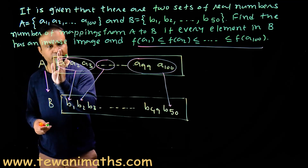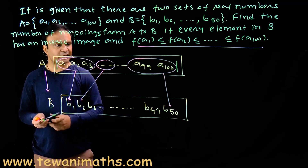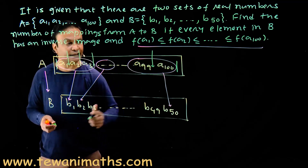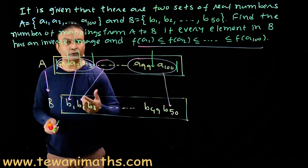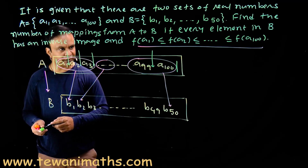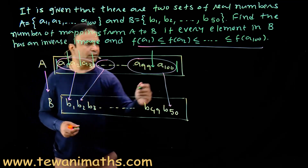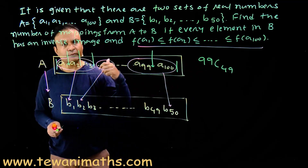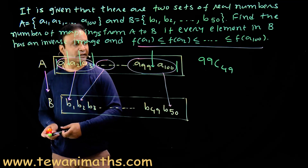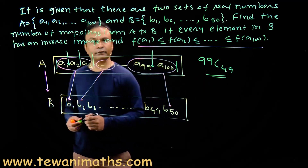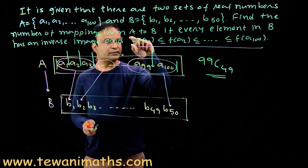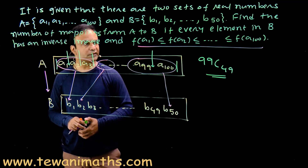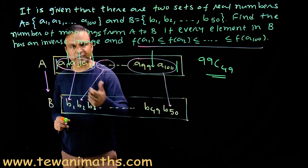We cannot put a partition at the very beginning or end, otherwise one group will be empty — we need non-empty groups. So we can only put partitions in the gaps between elements. We have 99 gaps. Out of these 99 gaps, we select 49 gaps to place 49 partitions, and we can select those 49 places from 99 in 99C49 ways. This equals the number of ways to form 50 non-empty groups, which equals the number of mappings with the given restrictions: f(a₁) ≤ f(a₂) ≤ ... ≤ f(a₁₀₀) and every element in set B has an inverse image.